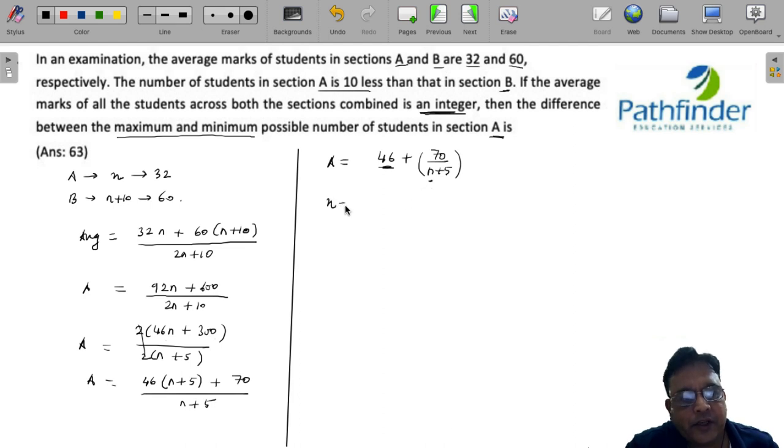For the average, you can see by mere observation that when N is equal to 2, you will get 70 upon 7 as an integer.